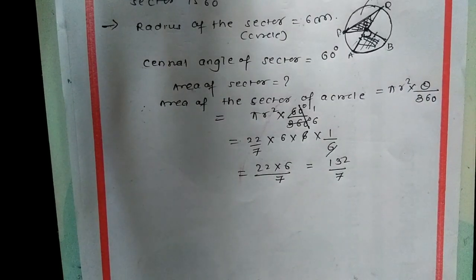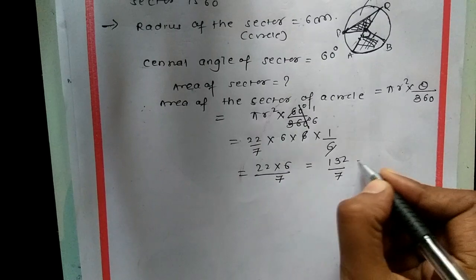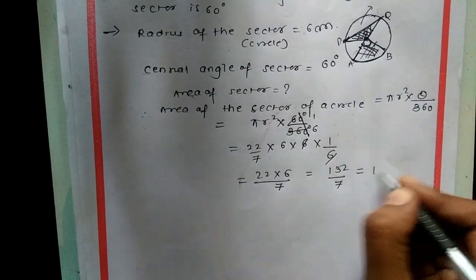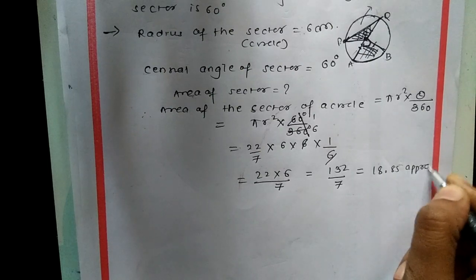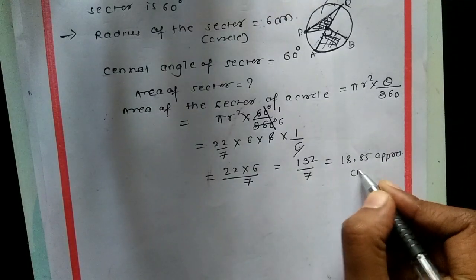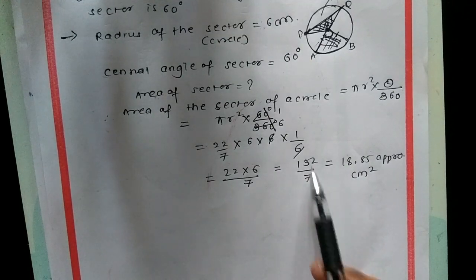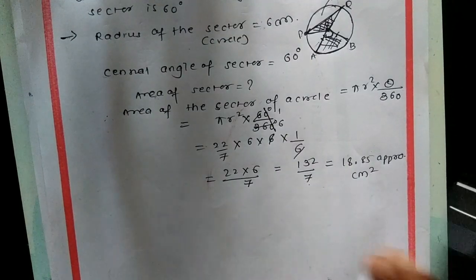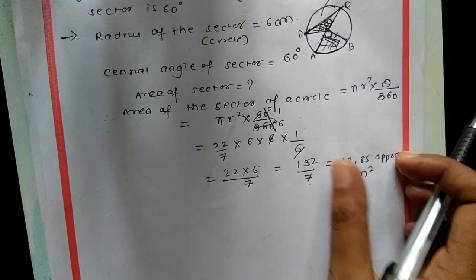132 and 7 have a common factor of only 1, so you can keep the answer as 132/7, or in decimals approximately 18.85 cm². Since radius is given in centimeters, area will be in centimeters squared. When the HCF of numerator and denominator is 1, you can stop the calculation here.